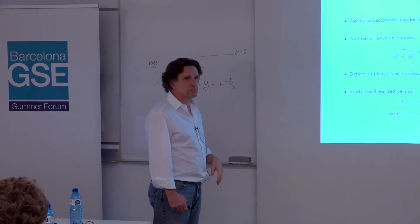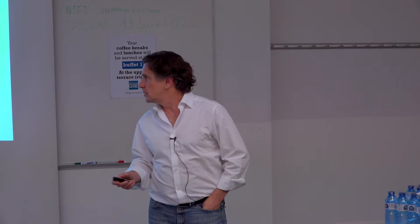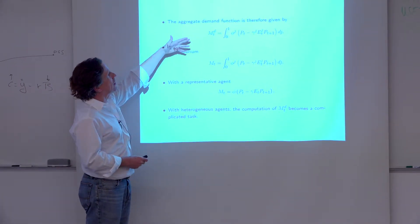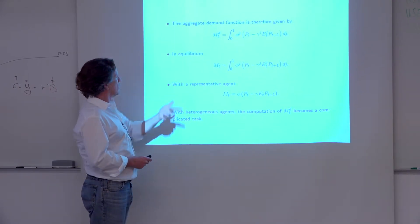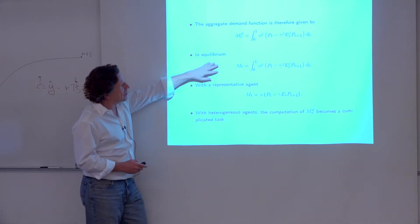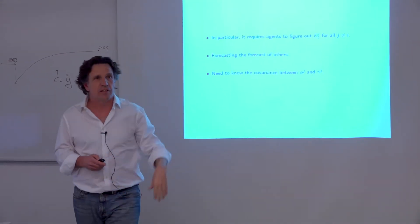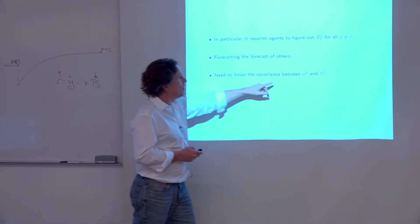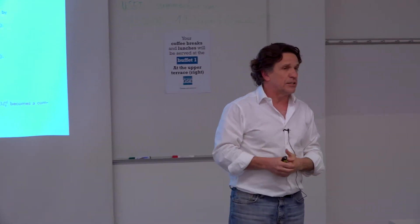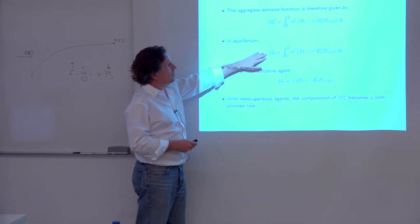How do you compute an equilibrium? You aggregate the money demand, and in equilibrium you make it equal to the money supply. With a representative agent this becomes just one equation. Now with heterogeneous agents, the computation is much more involved. First, you need every agent to figure out the expectations of other agents — forecasting the forecast of others. You need to know the covariance between the two agent-specific parameters, requiring knowledge of the first and second moments of the distribution of features over the population. So you need to know a lot — I don't even know this for my family, let alone for your whole country.